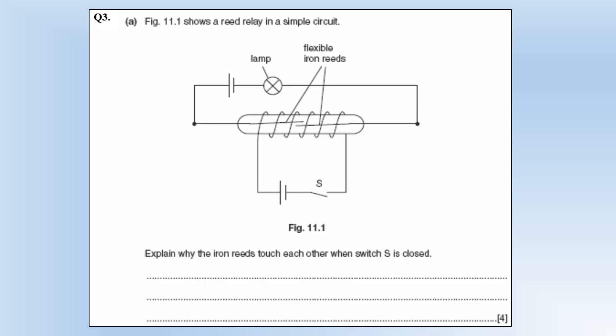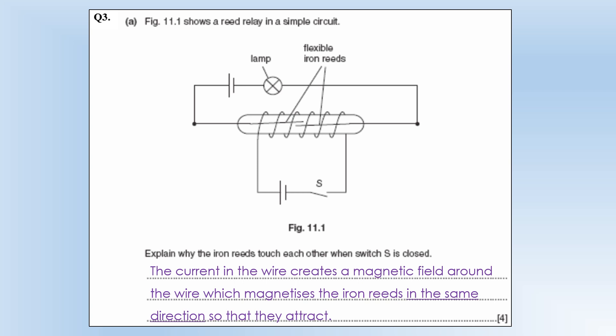The diagram shows a reed relay in a simple circuit. So you can see we've got a power source, a lamp. We've got a switch that's currently open. But we've got a relay wrapped around it presumably to allow us to close the switch. Explain why the iron reeds touch each other when the switch is closed. Well what's going to happen is you're going to get a current in the wire which is going to have a magnetic field around it. And that's going to magnetize the iron. And it's going to magnetize them both in the same direction because they're wrapped around both switches in the same way. And that's going to mean that they attract each other which closes the circuit.